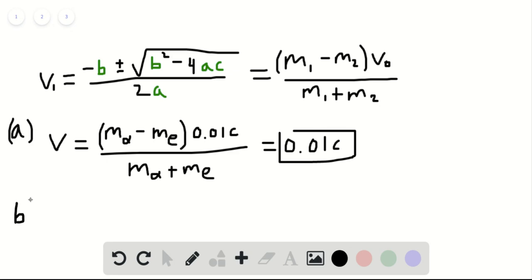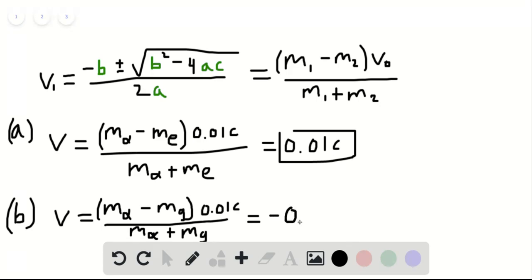For part B, we're going to do the same thing but now it's colliding with a gold nucleus. So V is equal to M alpha minus the mass of the gold nucleus, which we call M sub G, this is still multiplied by the speed which is 0.01C, and then this is divided by M alpha plus Mg. So this time plugging these values in, we find that this is equal to negative, because Mg is so large it becomes negative, 0.0096 times the speed of light.